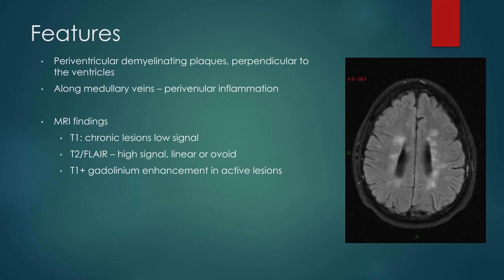The features you see are periventricular demyelinating plaques that are perpendicular to the ventricles. The reason they're perpendicular is that that's the orientation of the blood vessels, and it's thought there's inflammation around these blood vessels which causes the lesions in that area. We don't really see them on pathology but we see them frequently on MRI. On T1, chronic lesions are low signal but often isodense.